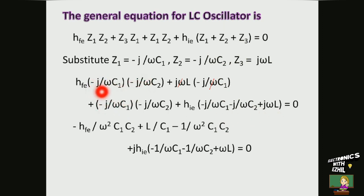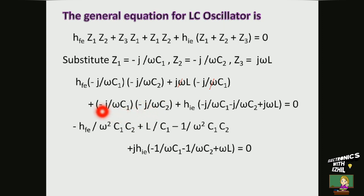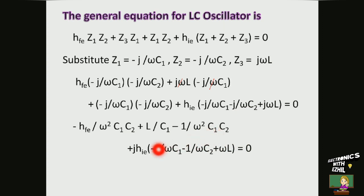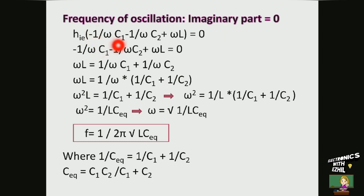Here j·j equals j² which is −1, so minus times minus gives plus. This yields −H(E)/(ω²C1C2). In the second term, ω cancels, giving L/C1. Simplifying further, j·j equals −1 and the result is −1/(ω²C1C2). Taking j commonly out from three terms gives: j·[H(E)·(−1/ωC1 − 1/ωC2 + ωL)] = 0. This is the real part of the expression. Equating the imaginary part to zero gives: H(E)·(−1/ωC1 − 1/ωC2 + ωL) = 0 to find the frequency of oscillation.